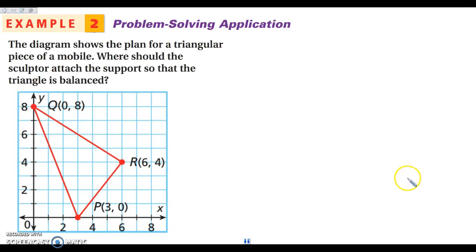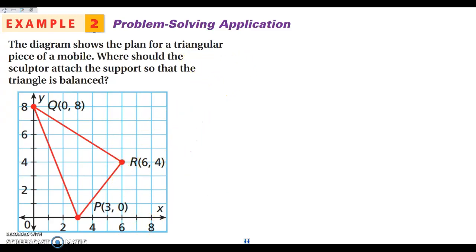Next we are looking for where the centroid is. We're drawing a diagram for a piece of a mobile — those things that hang above baby cribs. We want it to be balanced, and we want that triangle to be balanced. Remember that your center of gravity is the centroid. So we want to find the medians, which means we're looking for the midpoint of each side. That means we're going to be doing some midpoint formulas.